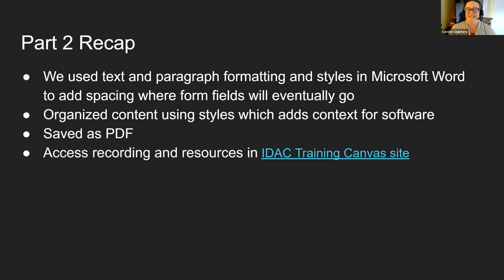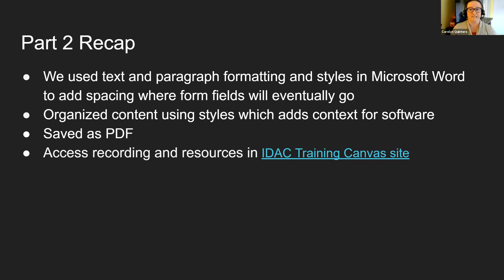What we learned last time was how to create an accessible source document with Microsoft Word — using text, paragraph formatting, and styles to add spacing where fields will eventually go. That source document isn't going to look like a form, but it creates the structure we can add form fields into with Adobe Acrobat. We also organize content using styles, which adds context necessary for assistive technologies to navigate those documents. Then we saved it as a PDF — we didn't print as PDF, we saved as PDF. That's the correct way to preserve all the work we've done.